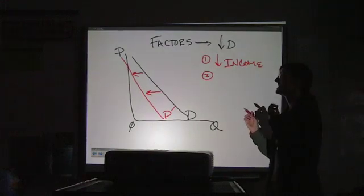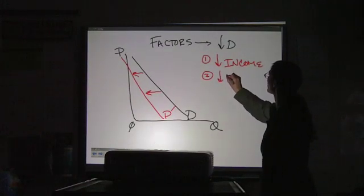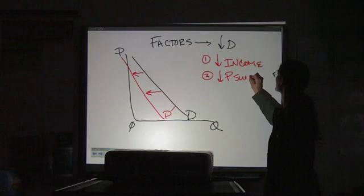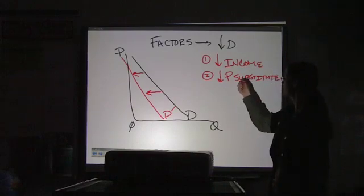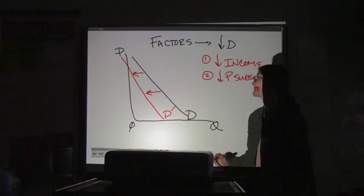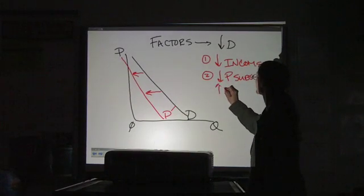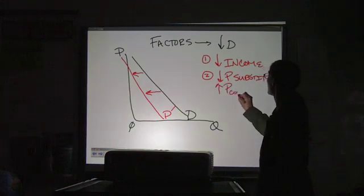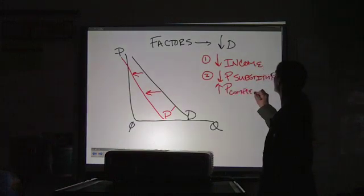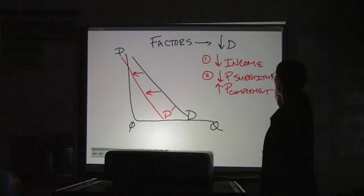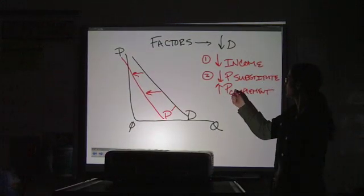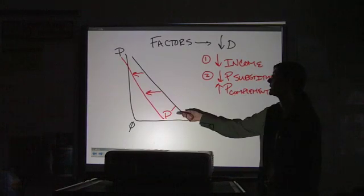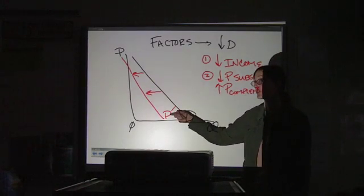If we decrease the price of a substitute, then that means the people will buy the substitute and not our product. If we increase the price of a complement, then that means you're buying less of this, so you buy less of this. Lower quantity demand of a complement, lower demand for the other good.